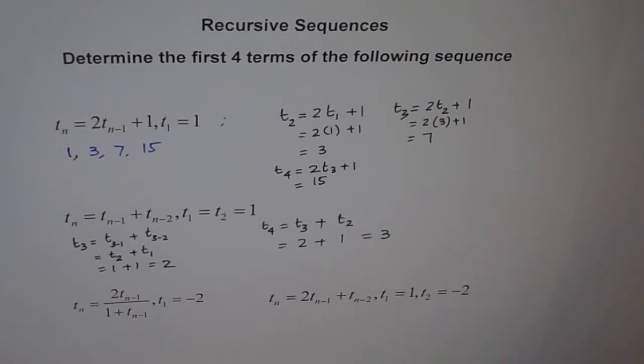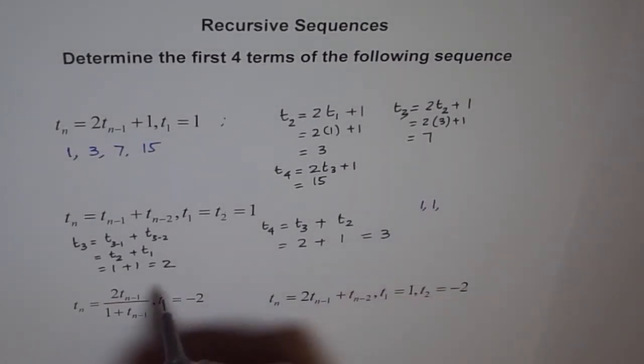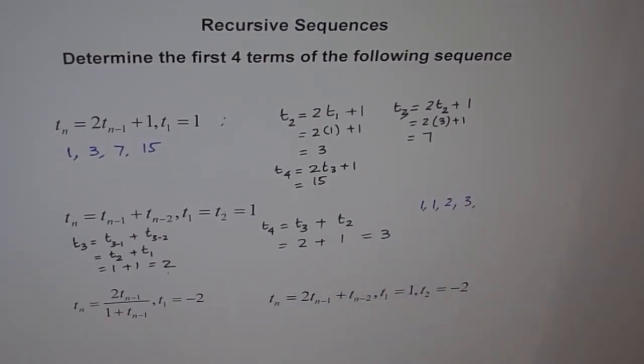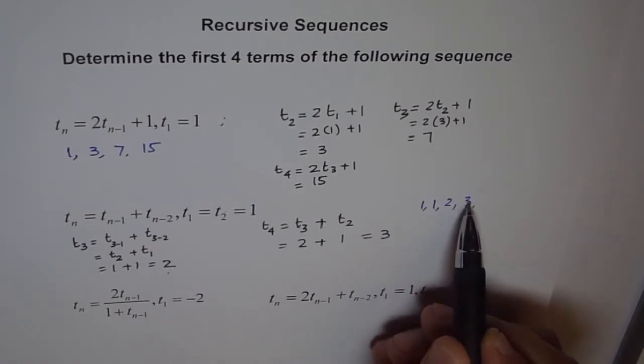Therefore, our first four terms are 1, 1, 2 and 3. So that is how the sequence is. That means if you add the previous two terms, you get the next term. So 1 plus 1 is 2, 1 plus 2 is 3. Similarly, you can move on.